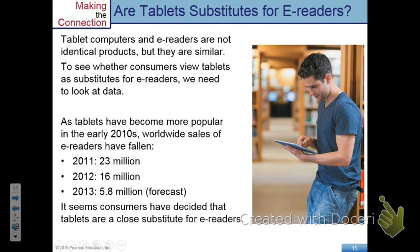The slide discusses whether tablets and e-readers are substitutes. This is controversial — to some extent they could be substitutes because you can read on both, but tablets can do a lot more than simple e-readers. The data shows that over time, as the number of tablets being sold increases, the number of e-readers sold is going down. Even if you don't believe they are substitutes, you can infer from the data that they are probably in competition with each other. A perfect substitute would be Coke and Pepsi, where the only difference between the products is the brand.